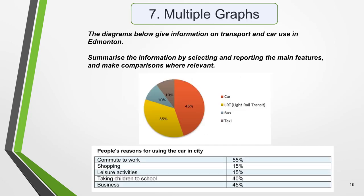Multiple graph questions have more than one type of diagram and are fairly common. They usually include two diagrams, such as a bar chart and a line graph, or a pie chart and a table, as in the sample question: The diagrams below give information on transport and car use in Edmonton.